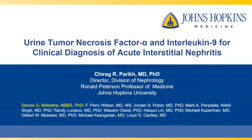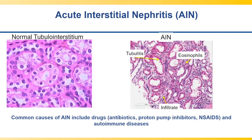I am Chirag Parikh and I am the senior author of this paper: Urine Tumor Necrosis Factor Alpha and Interleukin 9 for Clinical Diagnosis of Acute Interstitial Nephritis. My lab is involved in clinical phenotyping of acute kidney injury, and in this study we looked at diagnosis and prognosis of acute interstitial nephritis.